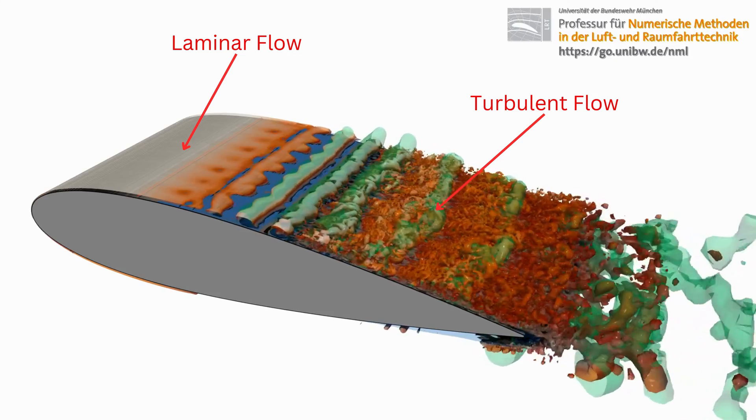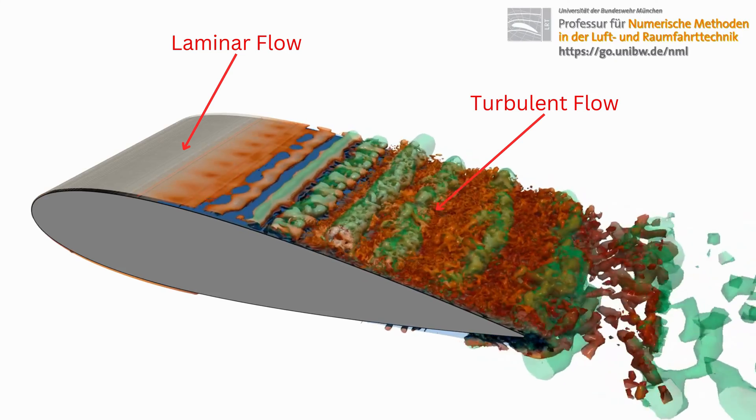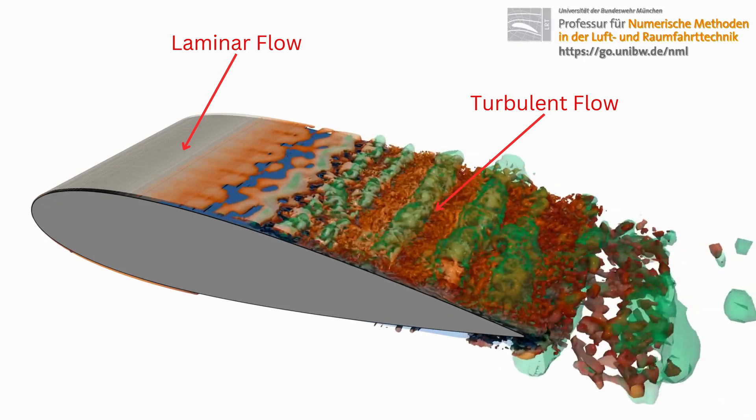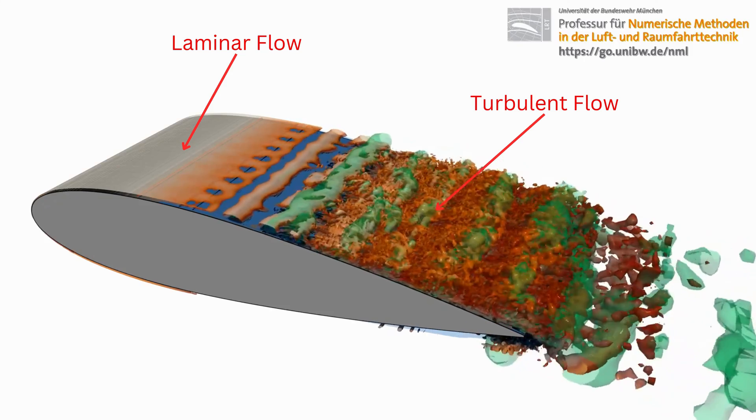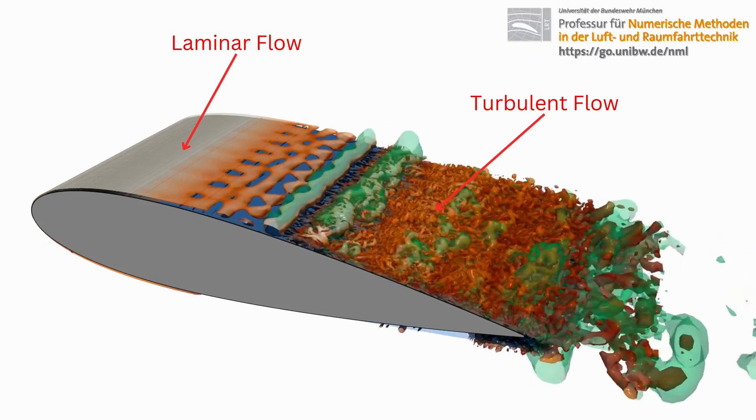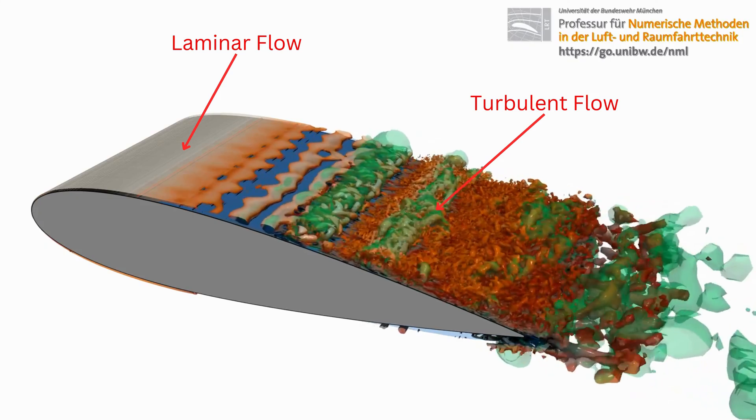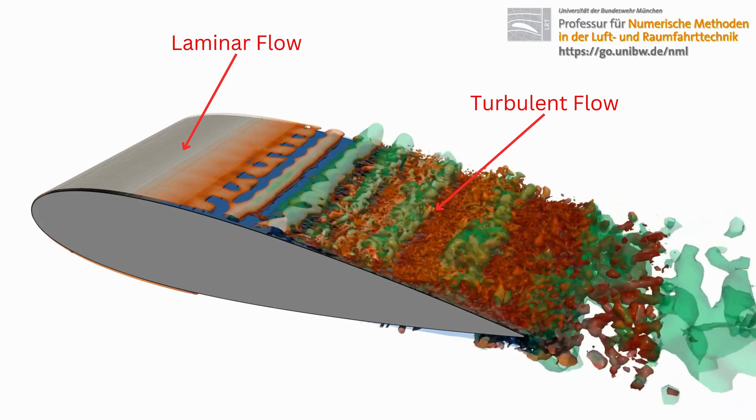Airfoils with greater thickness possess a larger surface area, typically leading to higher skin friction drag. Moreover, surface imperfections or roughness can prematurely induce turbulence, further amplifying skin friction drag.